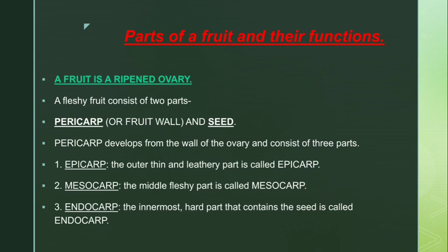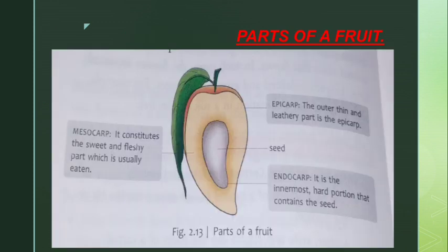The third part of the pericarp is the endocarp — the innermost hard part that contains the seed. The seed of the mango that we throw away, that is the endocarp. If you open up the endocarp, you will find a very small baby seed inside it, and if you sow that, a mango plant will develop from it.